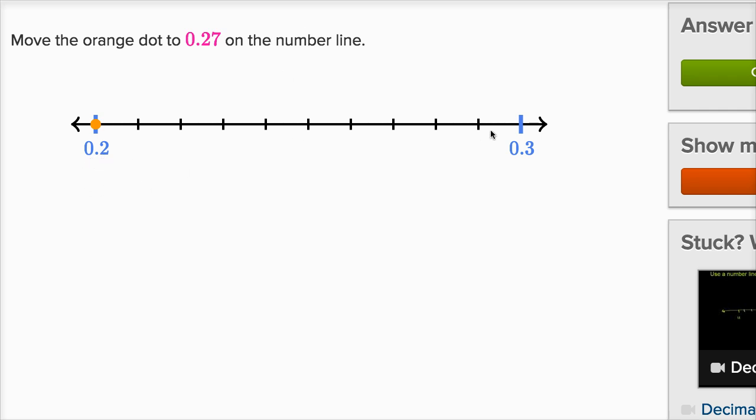Move the orange dot to 0.27 on the number line. Well, this is 0.2, this is 0.3. So going from here to here is a tenth, and then they've divided that tenth into ten sections.